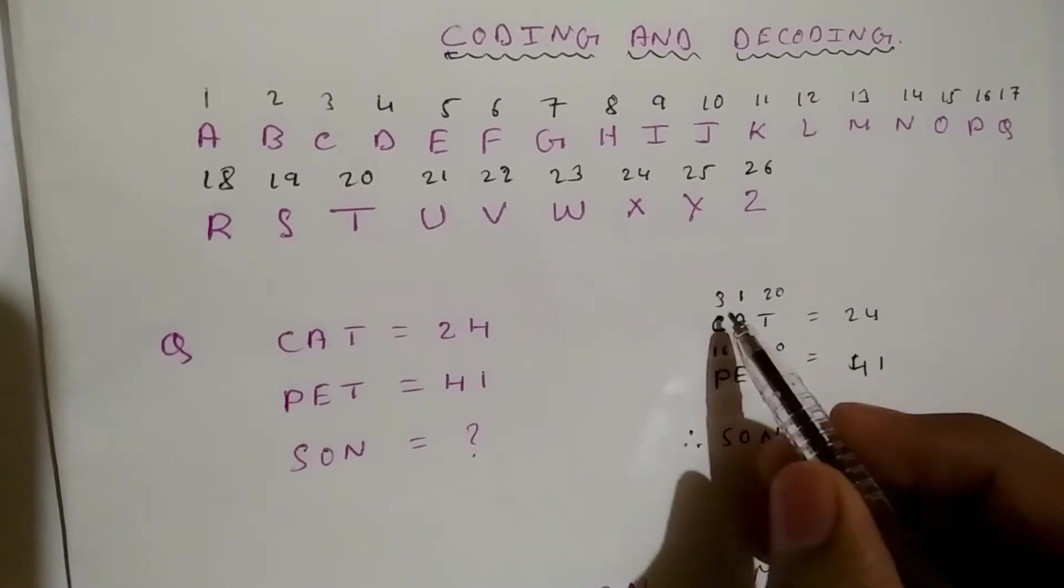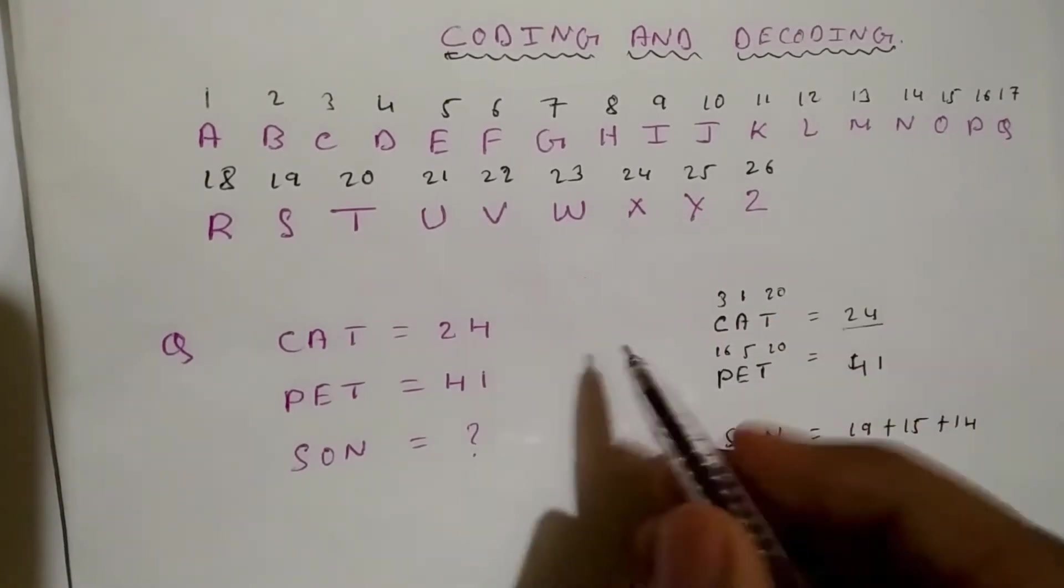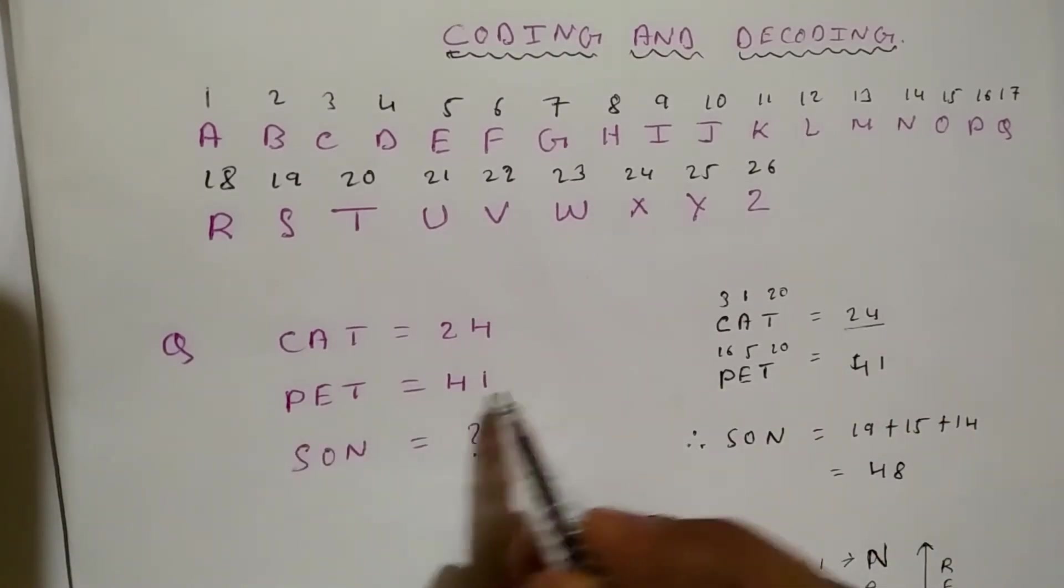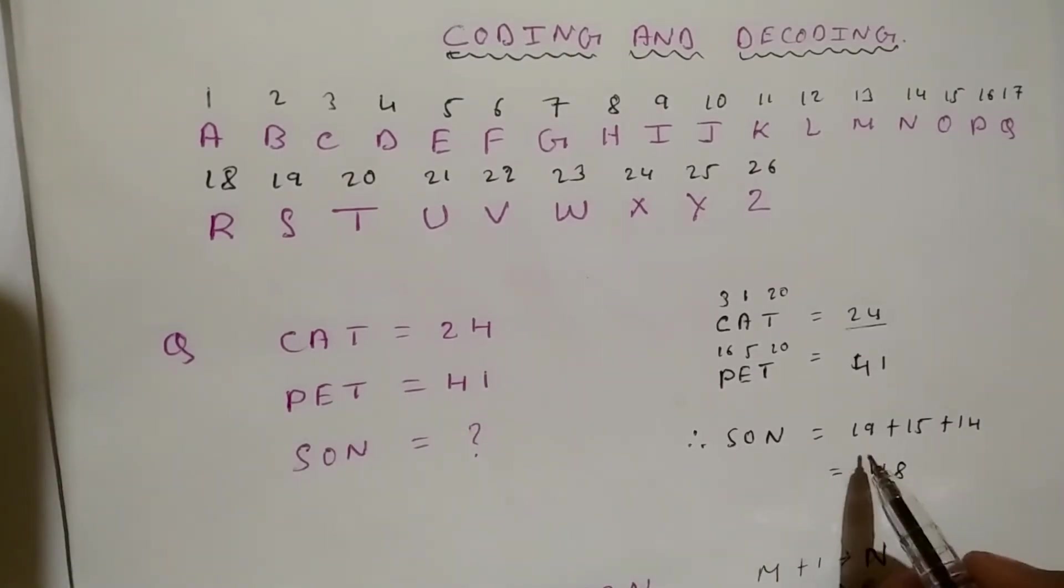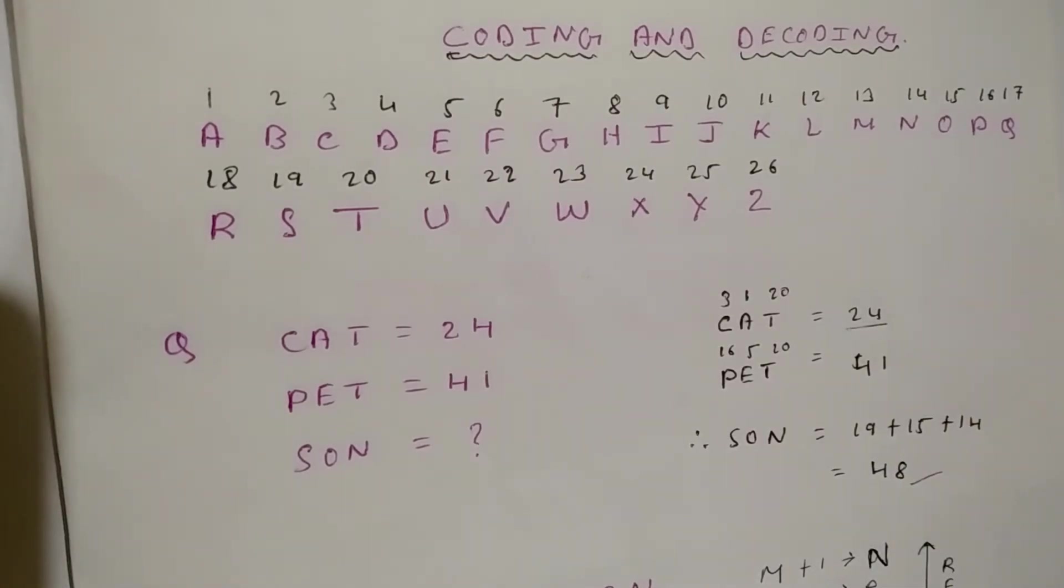So you can figure it out - if this is 24, then PET equals 41 by adding these numerical values. Then SON equals, and this way we can find out SON equals 19 plus 15 plus 14 equals 48. It is very important, very easy, and very basic.